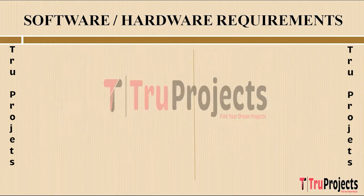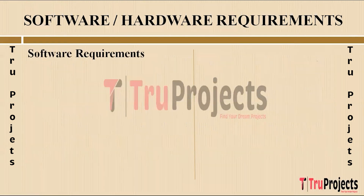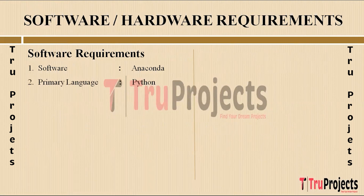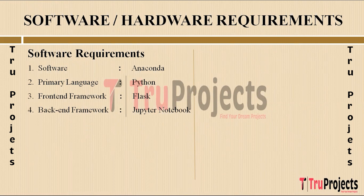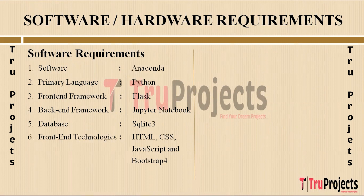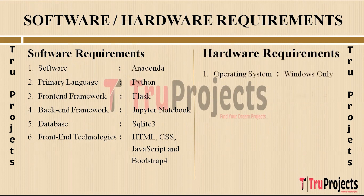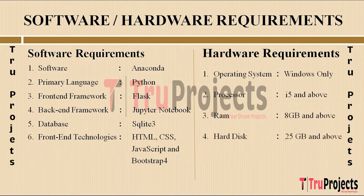Requirements needed to execute this project include software and hardware. Software needed is Anaconda; primary language used is Python; front-end framework used is Flask; back-end framework used is Jupyter Notebook; database used is SQLite3; and front-end technologies used are HTML, CSS, JavaScript and Bootstrap 4. Hardware requirements are: operating system Windows, processor i5 and above, RAM of 8GB and above, and hard disk of 25GB and above.